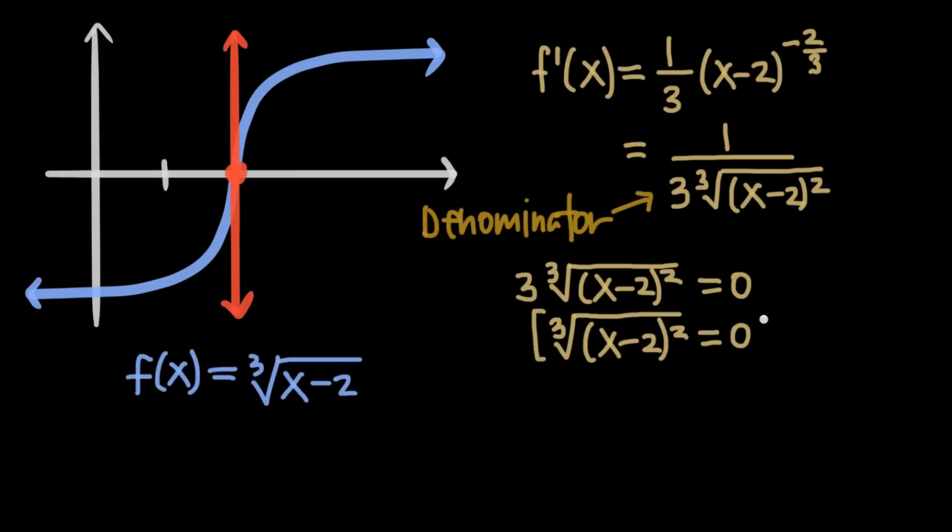Then we'll raise both sides of the equation to the third power to get rid of the third root on the left. That'll leave us with x minus 2 quantity squared equals 0. Then we'll raise both sides to the 1 half power to cancel the exponent on the left. That'll leave us with x minus 2 equals 0. We add 2 to both sides and get x equals 2.